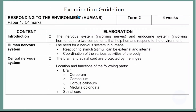Here I have the examination guideline. The examination guideline is one of the important tools that every student must have, because this guideline tells us what the examiner wants us to know before we sit for an examination. We are on the topic: responding to the environment in humans, which falls under paper 1 and accumulates 54 marks.